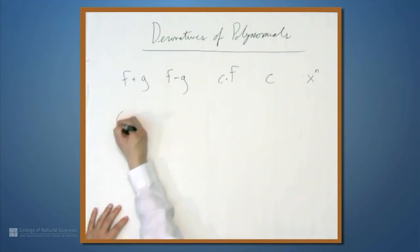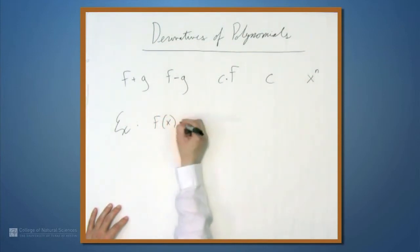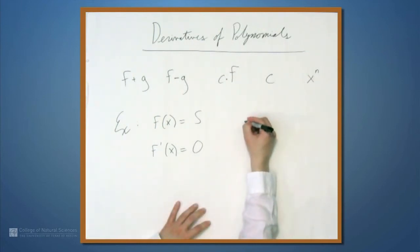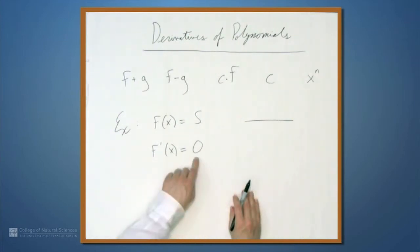Let's start with an example. If f of x equals 5, then the derivative of x is 0. The derivative of a constant is 0, and this is easy to see if you think of the derivative as the slope of a function. A constant function is a horizontal line and the slope is 0 everywhere, so the derivative must be 0 everywhere also.